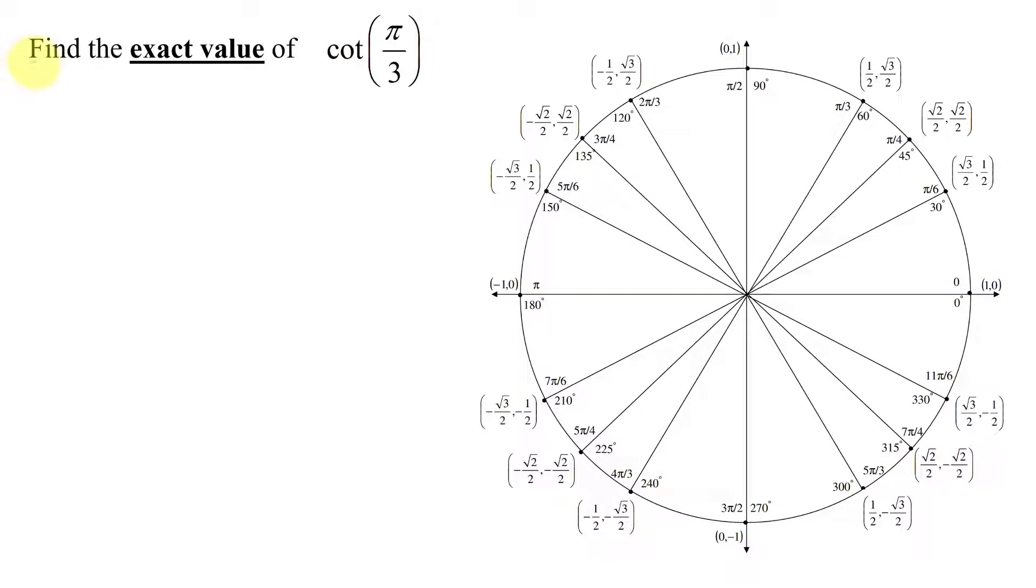In this example, I need to find the exact value of the cotangent of pi over 3. As the problem states exact value, this means don't use your calculator as it will give you a decimal approximation.